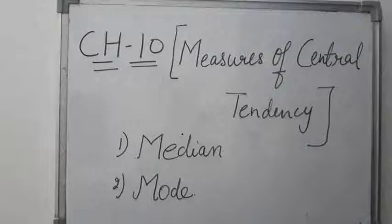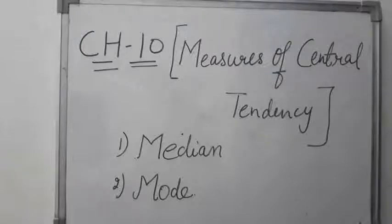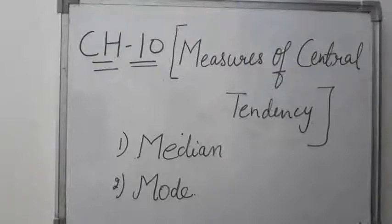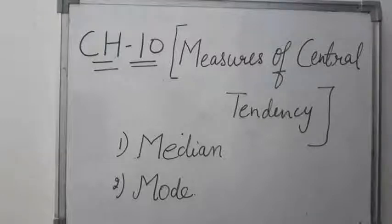Welcome all in economics class. In the last chapter, we have read about the simple arithmetic mean. Now, in this chapter 10, we will study about the other measures of central tendency: median and mode.